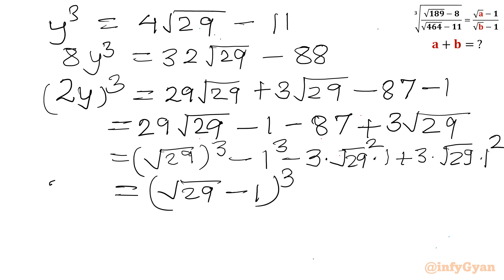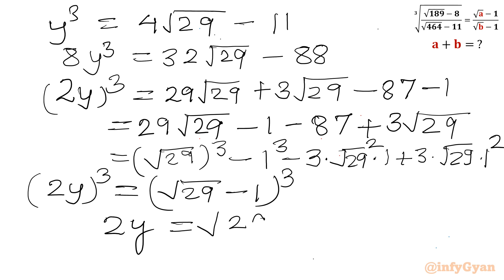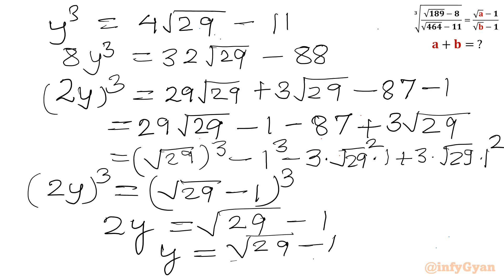So (2y)³ equals (root 29 minus 1)³. Taking cube roots both sides: 2y equals root 29 minus 1, so y equals (root 29 minus 1) over 2. This is our denominator.